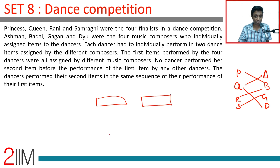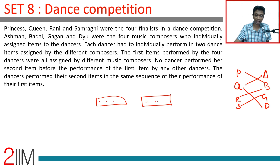The dancers perform their second items in the same sequence as their performance of the first item. So same order — for example, if the first round is P, R, S, Q, then the second round will also be P, R, S, Q.